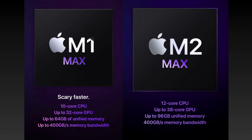Now let's talk about the M1 Max versus the M2 Max. The M1 Max came with a 10-core CPU, but the M2 Max comes with a 12-core CPU. You can now configure the M2 Max with up to 38 cores of GPU, compared to 32 cores in the M1 Max. Also, the unified memory can now be configured up to 96 gigabytes with a memory bandwidth of 400 gigabytes per second, up from 64 gigabytes in the M1 Max — great news for users with demanding workflows.